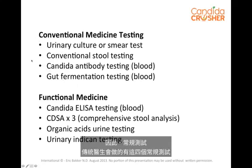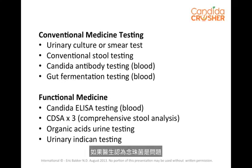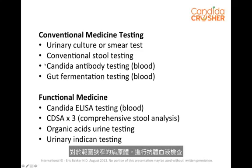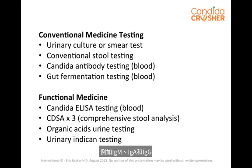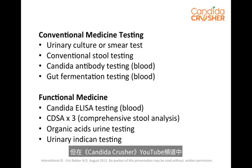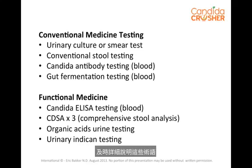Conventional testing — these are the four general tests a conventional doctor will do: urinary culture or smear, conventional stool test for a narrow range of pathogens, an antibody blood test, and a gut fermentation test. But a functional medicine practitioner or naturopath will be more interested to do the enzyme-linked blood test to determine various antibodies of Candida such as IgM, IgA, and IgG. I will certainly elaborate on these terms in other more comprehensive video clips on the Candida Crusher YouTube channel.